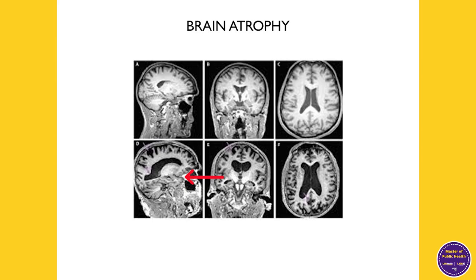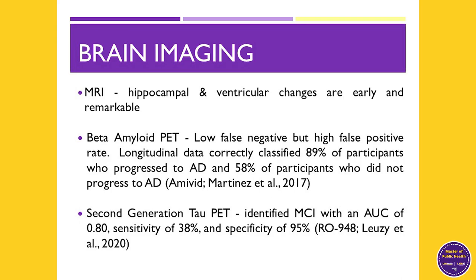We can also image beta amyloid using positron emission tomography using radioactive tracers. This technique has a low false negative rate but a high false positive rate — we detect everyone who has dementia, but there are actually a fair number of people walking around with a significant beta amyloid load who do not have dementia. Longitudinal data showed we could correctly classify about 89% of participants who progressed to Alzheimer's disease, but only 58% of participants who did not.